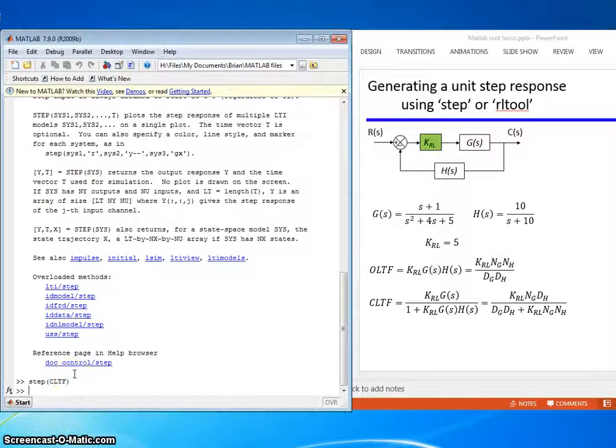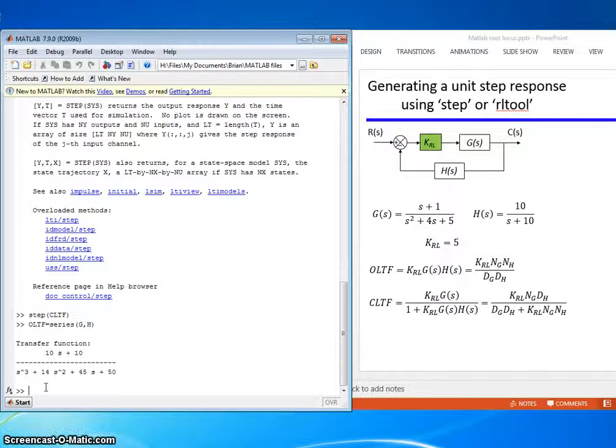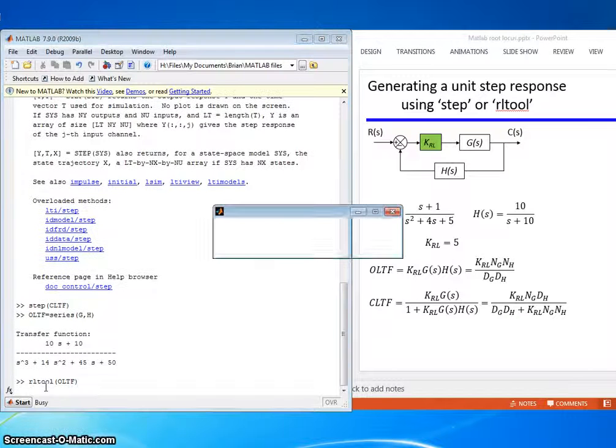All right, let's try using RL tool. This time, earlier I set KRL equal to 5, but I want to go in RL tool because I want to see how the step response changes as I vary KRL from 0 to infinity. So let's build the open transfer function. Transfer function equals series of G and H. And let's do RL tool, the open loop transfer function, and see what happens.